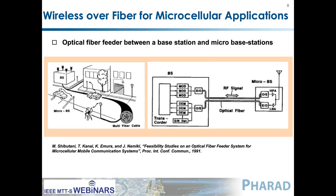There was also work done in Japan, again looking at microcellular applications and replacing coax with optical fiber. The architecture shows this concept of simplifying the equipment located near the antenna — in its most simple sense, this is an analog fiber optic link. You modulate the laser and at the other end you receive and recover those RF signals, then amplify before transmission by the antenna. In the reverse upstream direction, signals received from the user are amplified using a low noise amplifier, modulated onto an optical carrier, and sent back to the base station.